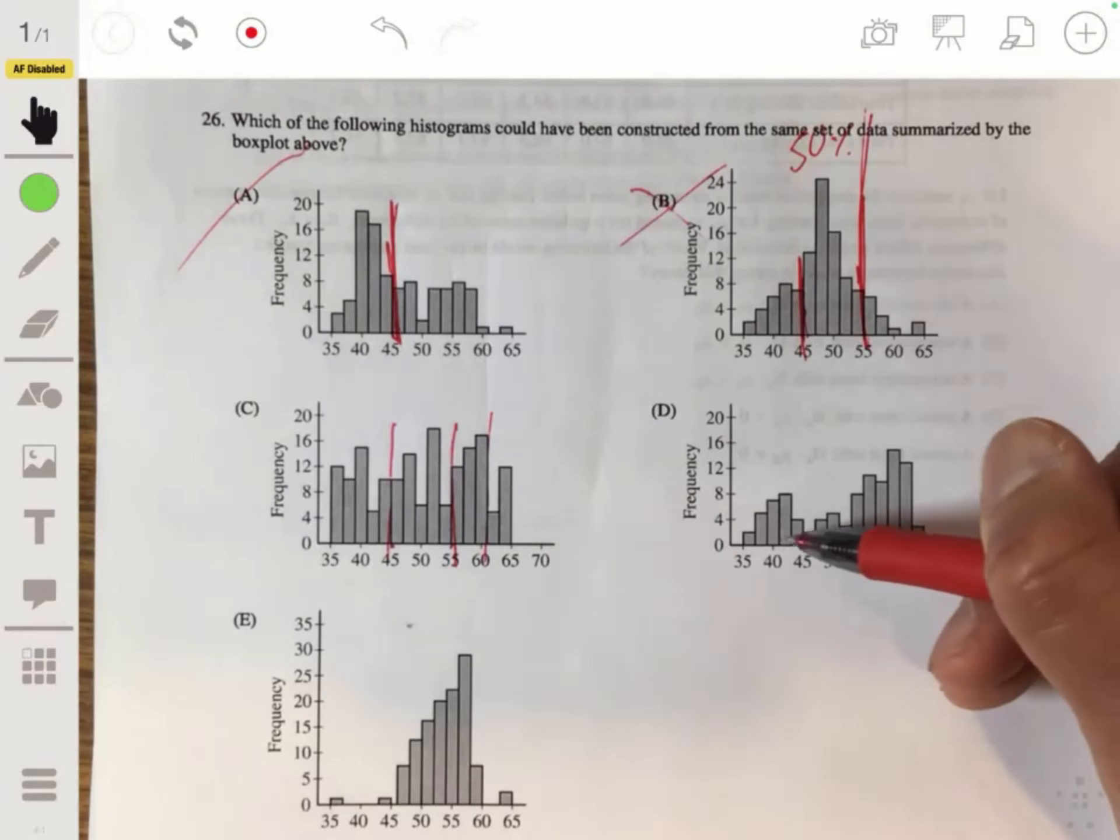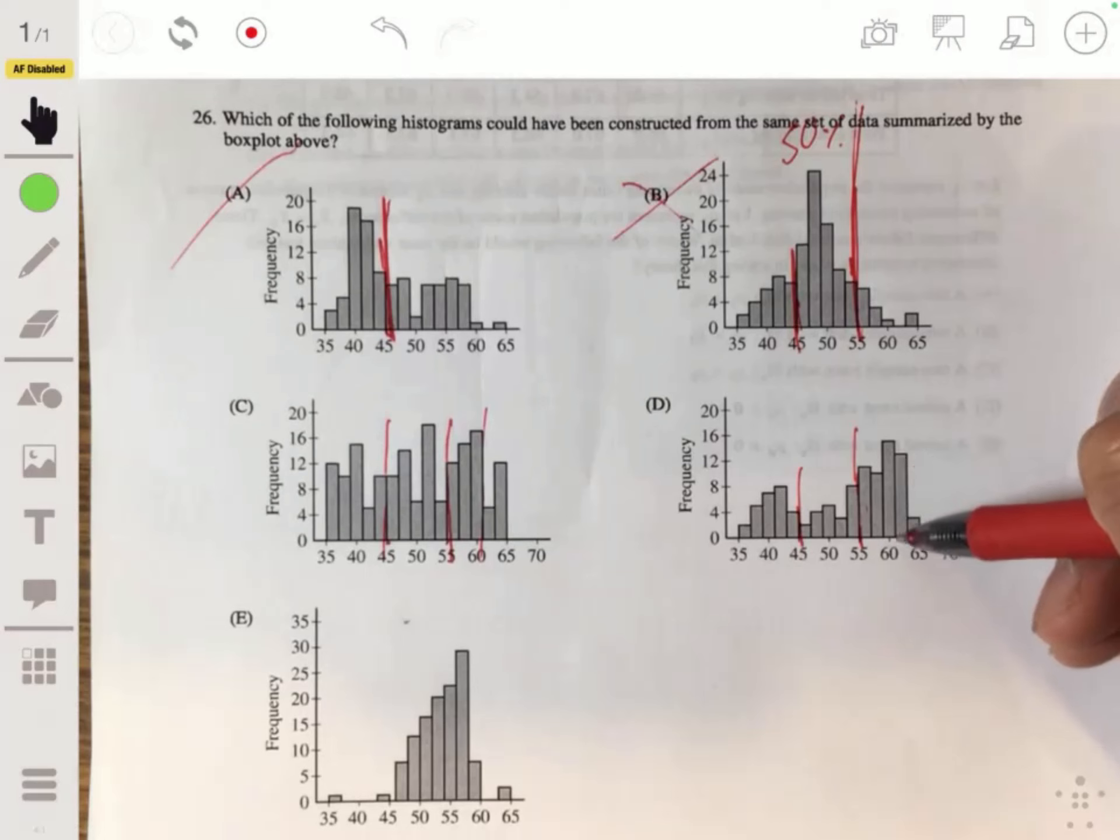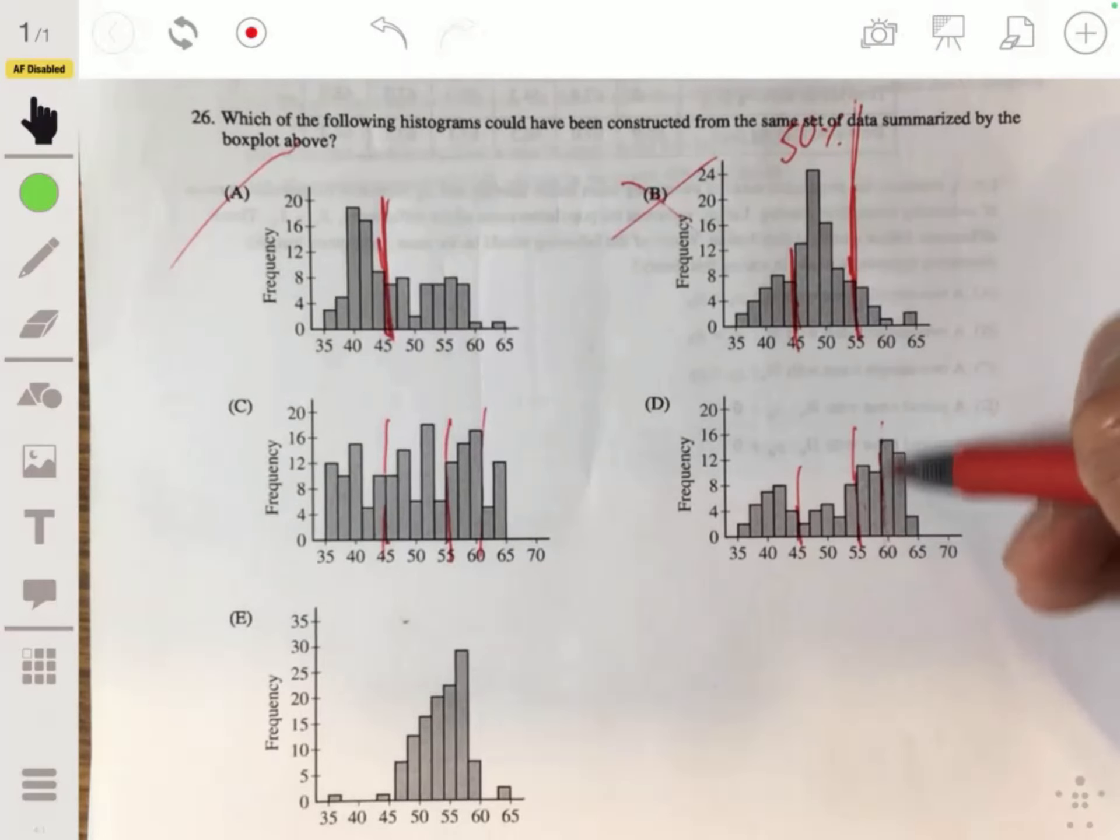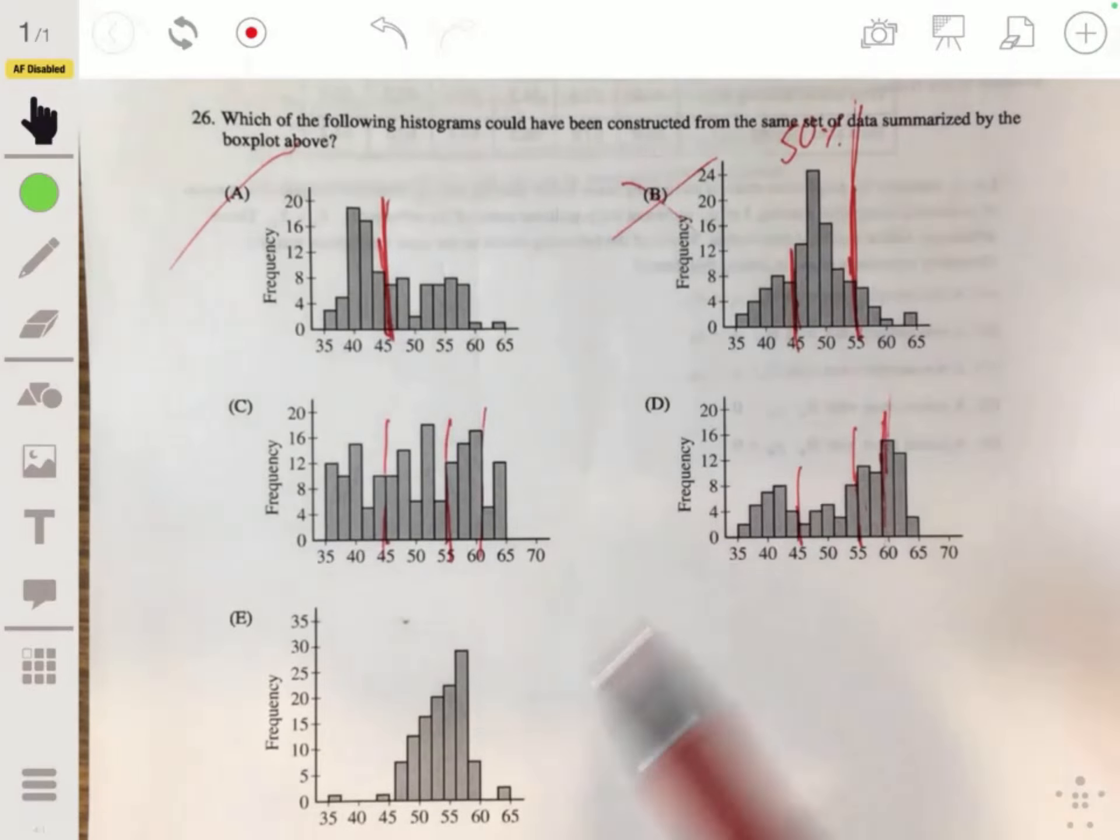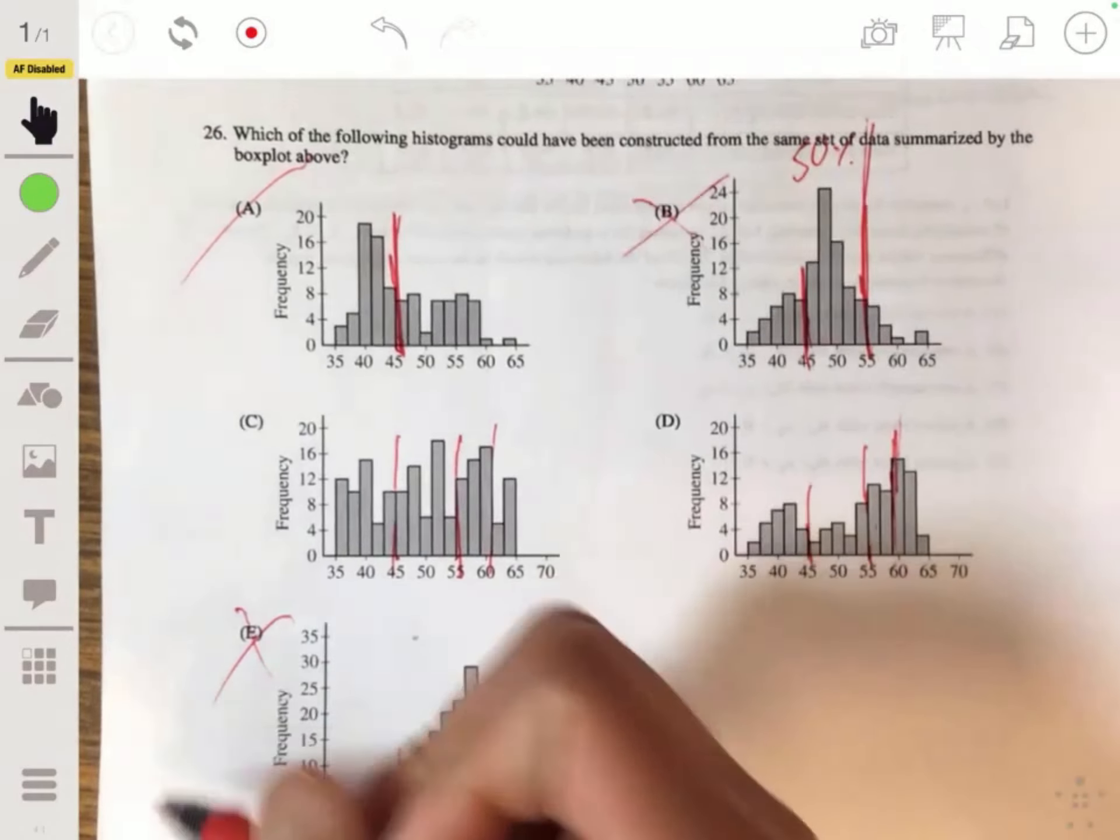D will be 35 to 45, then 55. So this one also could be one of them. E, definitely not. 25% is not even here.